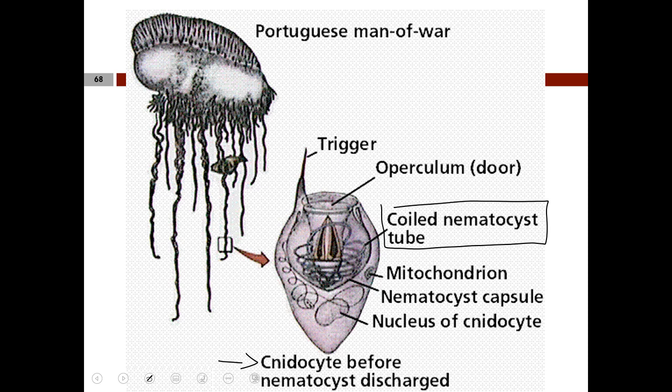Each cnidocyte projects a trigger on its outer surface. When stimulated by touch or chemicals dissolved in water, the nematocyst fires its thread. Some nematocyst threads are sticky, while others are long and coil around prey. The toxin ejected may paralyze prey animals such as small crustaceans. The two body forms — medusa and polyp — both have tentacles arranged around the opening. The sessile polyp form is on the left; the mobile medusa form is on the right.